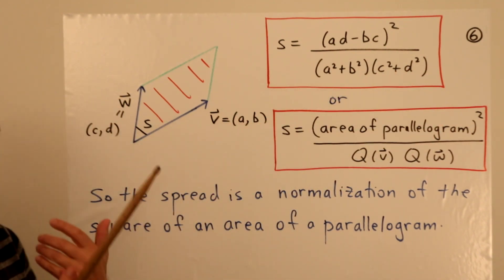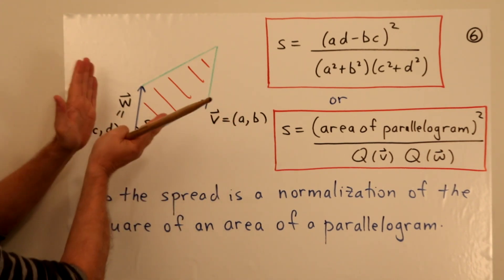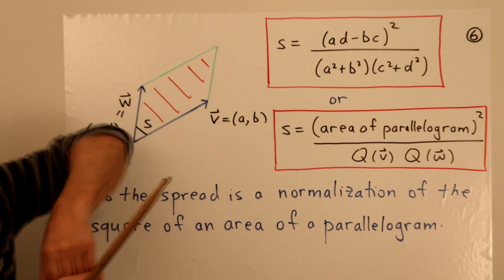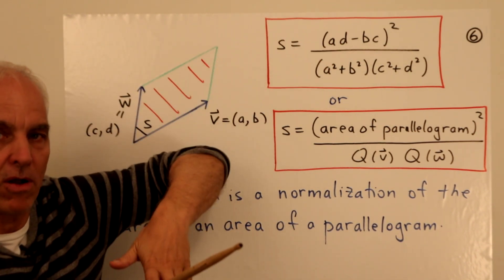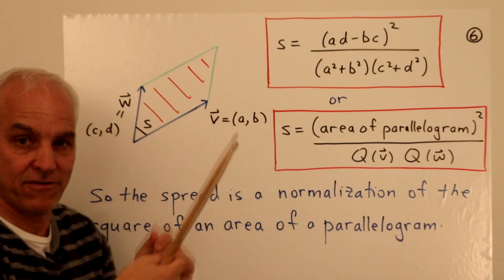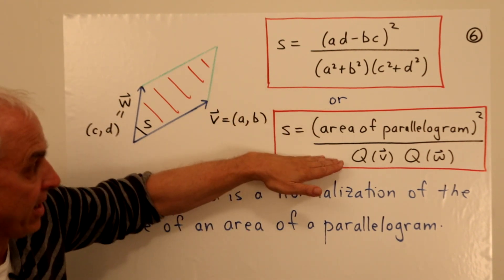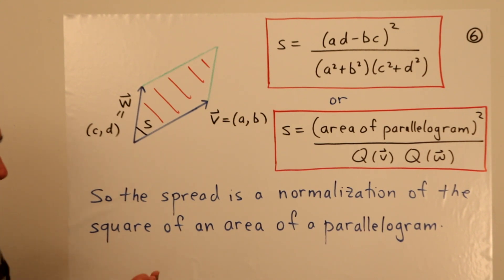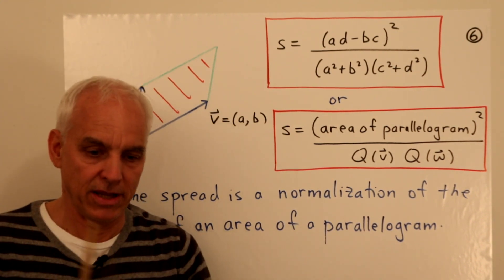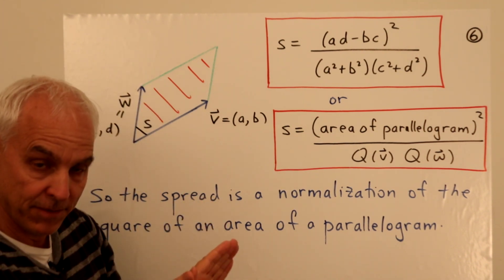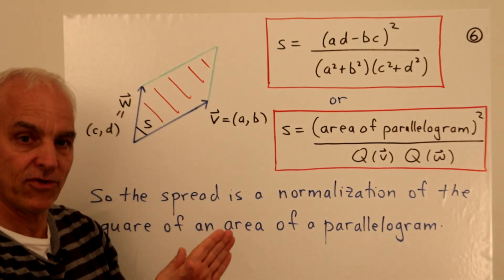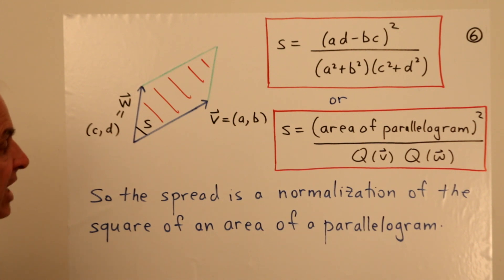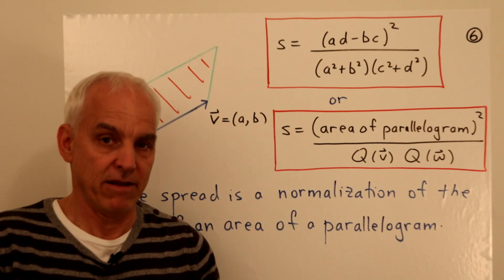And on the bottom is really a normalization. Okay, so we're saying that the spread is actually the square of the area of this parallelogram. But obviously then if we multiply the vectors by scalars, then we could make this parallelogram be arbitrarily big or small. So to get a number that doesn't depend on the actual sizes of the vectors, but only on their directions, we want to normalize the area squared. And conveniently, we just use the product of the quadrances of V times the quadrances of W. So that's another way of thinking about what a spread is very geometrically. It's the area of a parallelogram squared, which is normalized by dividing by the product of the two quadrances of the vectors that form that parallelogram. That's a very beautiful and important interpretation and shows yet again why the spread is absolutely really a fundamental quantity.